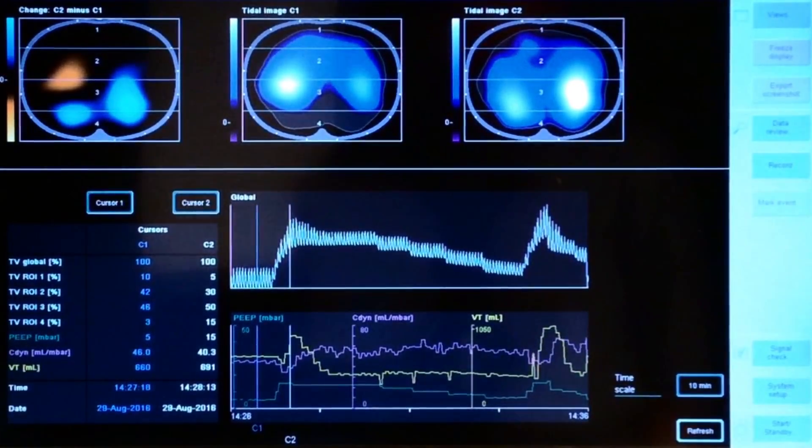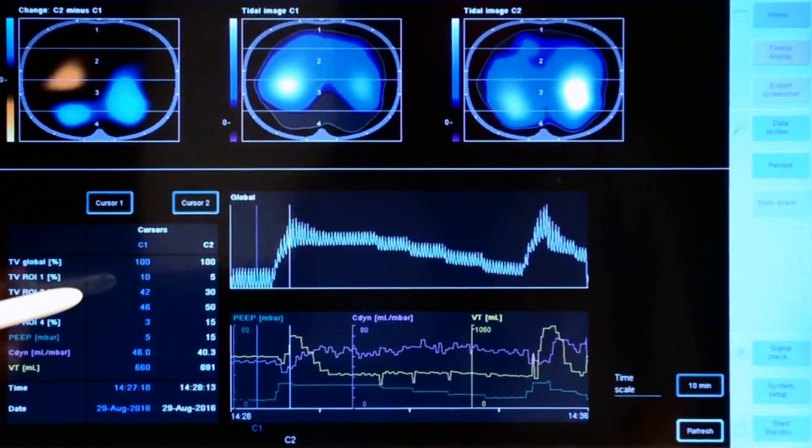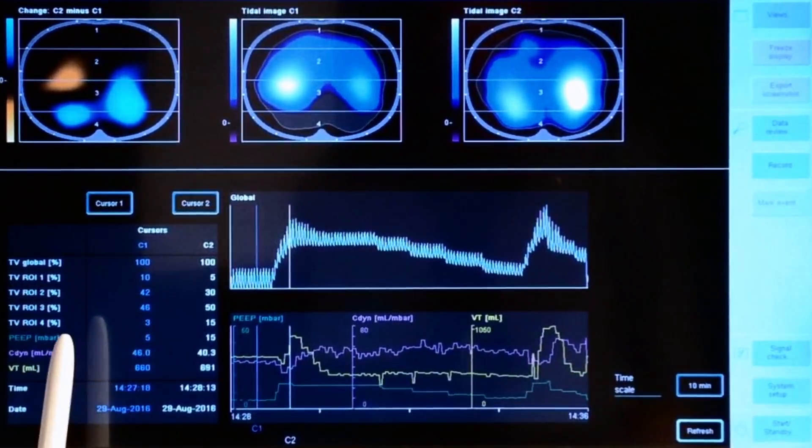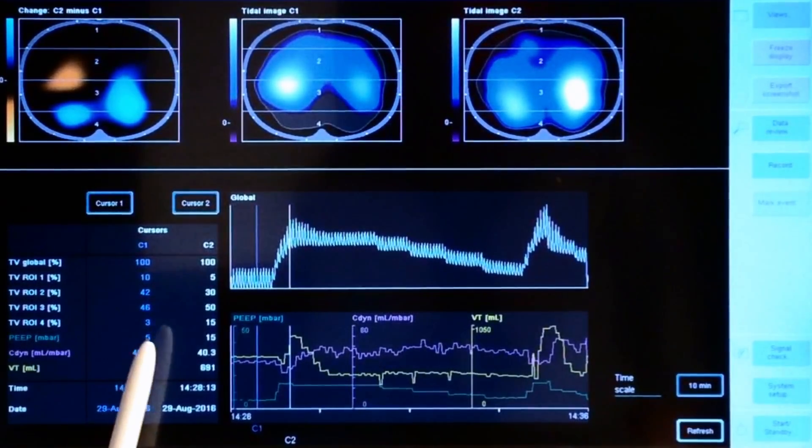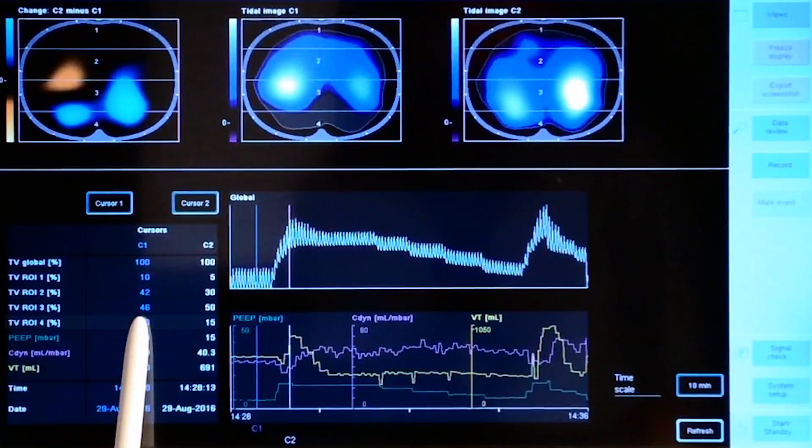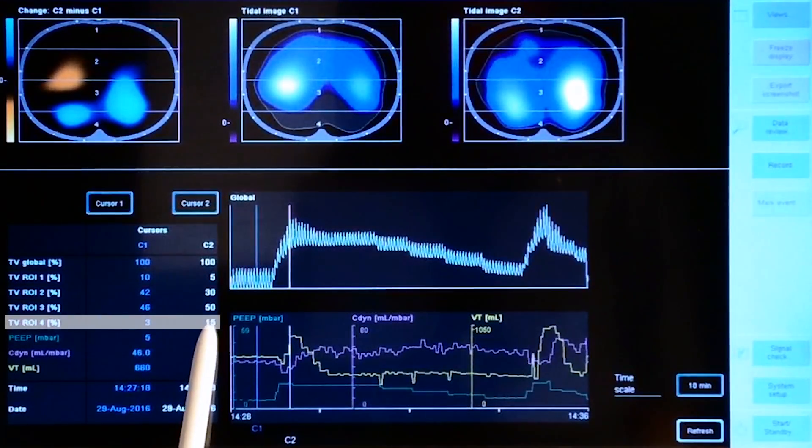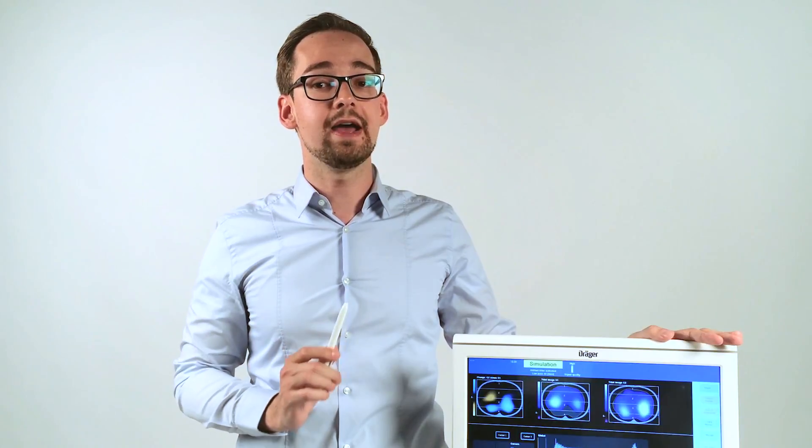You can also quantify how much more ventilation has been delivered into region four by looking at the trend table. In this example, the tidal variation increased from 3% to 15%. With all this information combined, we can clearly see that the patient responded strongly to higher airway pressures.